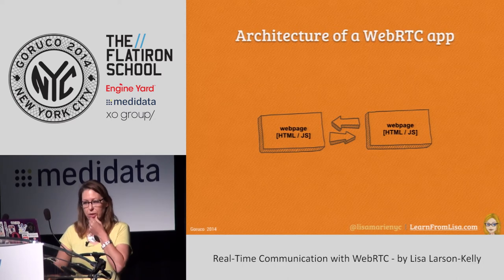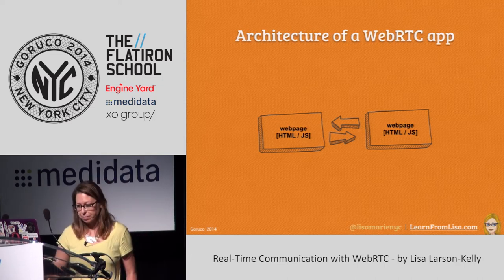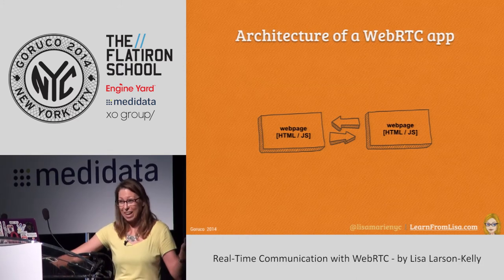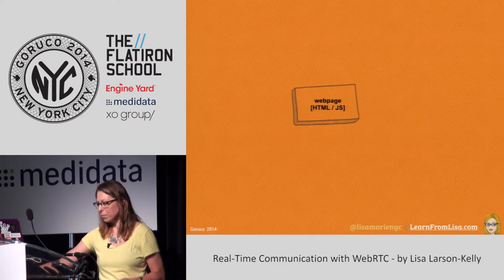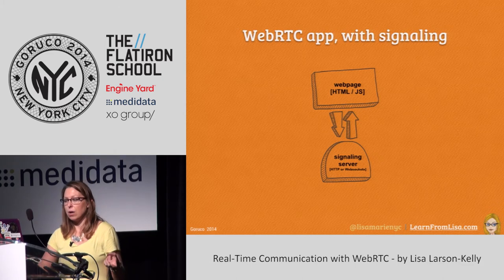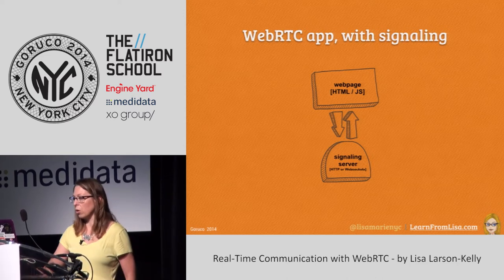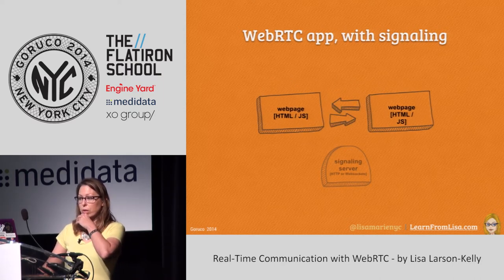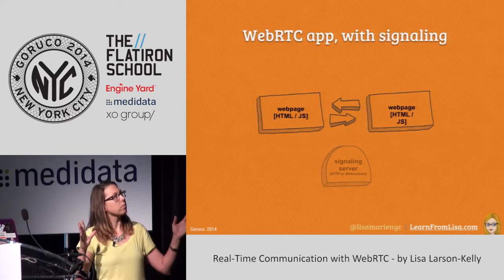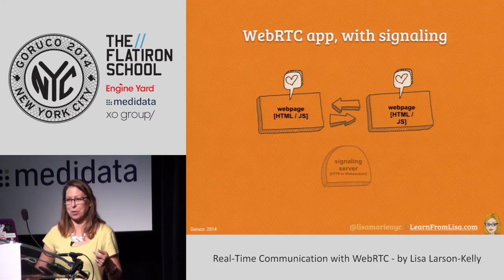Looking at the architecture: in a perfect world, you'd have one browser connected directly to another with no plugins in between. It can work this way if you're on the same LAN. But in the real world, we need a little help. To get our two peers connected directly, we need a server that can introduce them — a signaling server. This could be hosted on the same server as your web pages, or you could use a service or host it elsewhere. The server will perform a handshake, introduce the two peers, and then get out of the way.